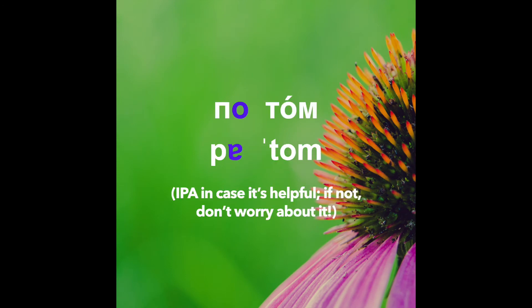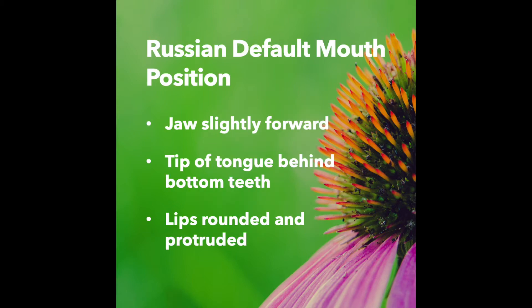The O in the first syllable sounds like an ah-flavored schwa. Let's say it with good Russian default mouth position: draw slightly forward, tip of the tongue behind the bottom teeth, lips rounded and protruded.